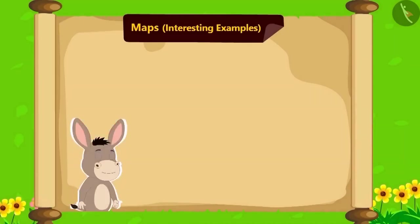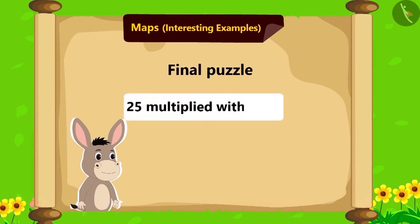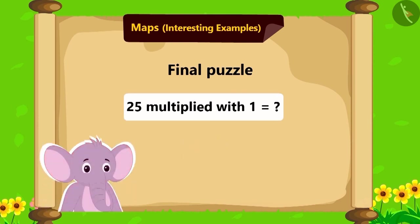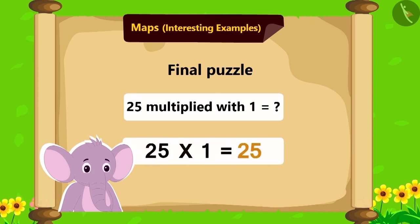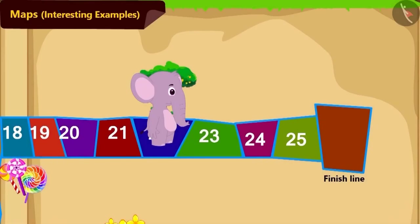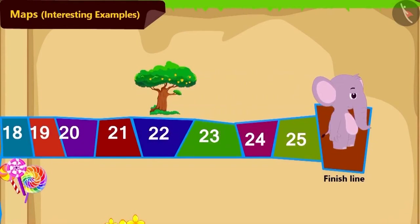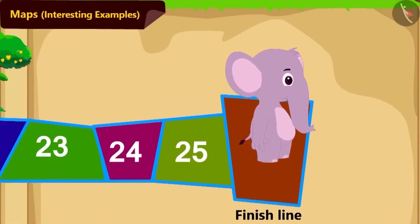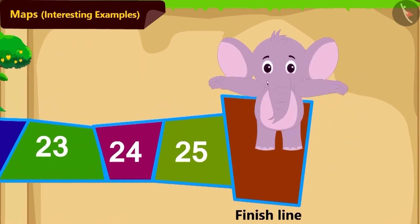Now Bholla asked his final puzzle: if you multiply twenty-five with one, then what will you get? Children, do you know the answer? Well, if we multiply any number with one, we will get the same number. Therefore, twenty-five multiplied with one is twenty-five. On getting this answer, Appu ran to tile number twenty-five and reached the finish line and started jumping happily.